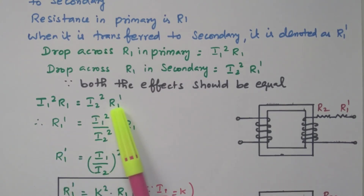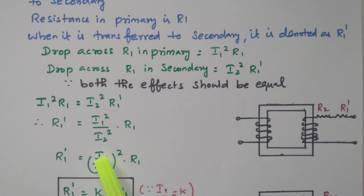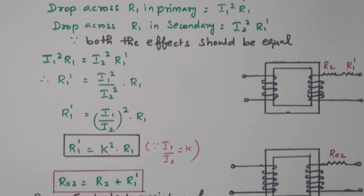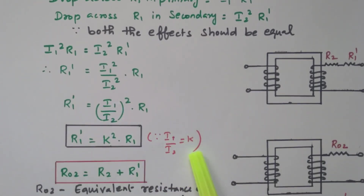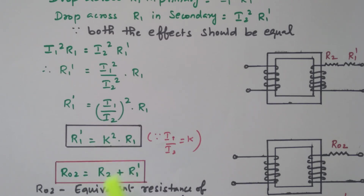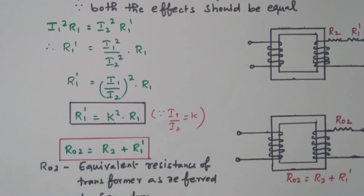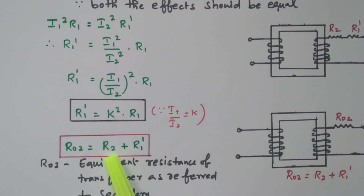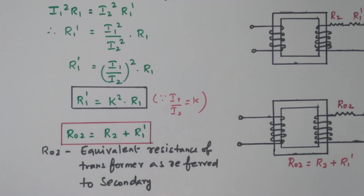So R1 dash equals I1 squared divided by I2 squared, times R1 — that can be written as (I1/I2) whole squared into R1. We know that I1/I2 is K, so R1 dash equals K squared into R1. This is the resistor transferred from primary to secondary — it is multiplied by K squared, whereas the previous case was divided by K squared. The total resistor in the secondary side R02 is: R2 already available, plus R1 dash after transferring the primary. So R02 is the equivalent resistance referred to the secondary.